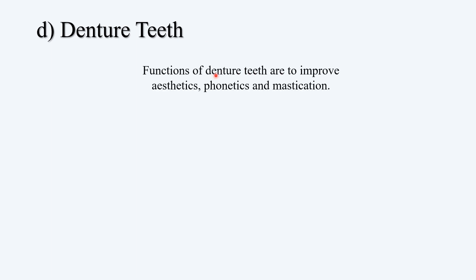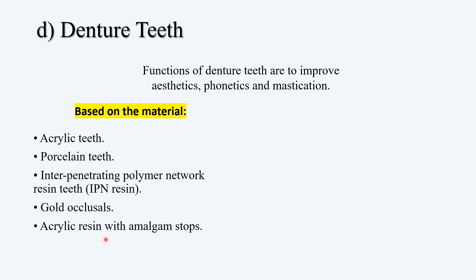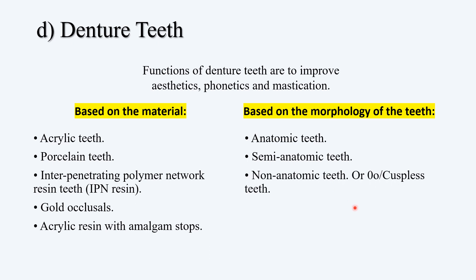Now we have denture teeth. The function of denture teeth is obvious — to improve aesthetics, so when we laugh or smile we have a beautiful smile. It helps with phonetics and also mastication. Based on material, teeth can be classified as acrylic, porcelain, interpenetrating polymer network (IPN) resin teeth, gold occlusals, or acrylic resin with amalgam stops. Based on morphology, they can be anatomic, semi-anatomic, non-anatomic, crossbite teeth, and metal insert teeth.